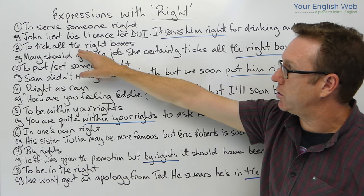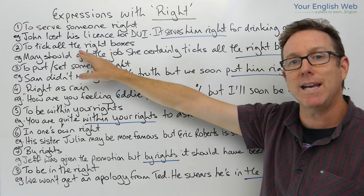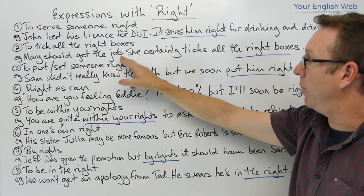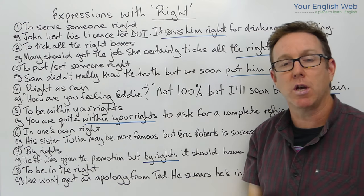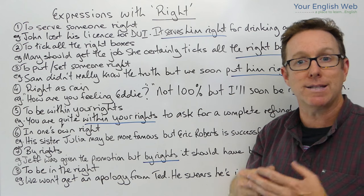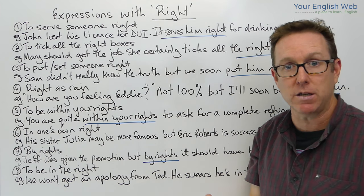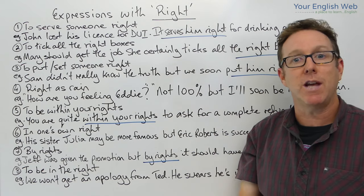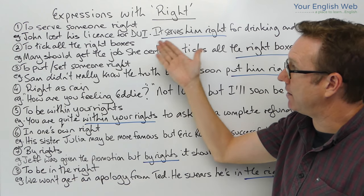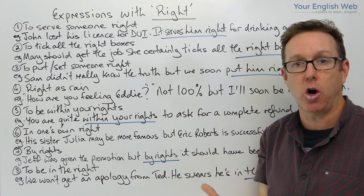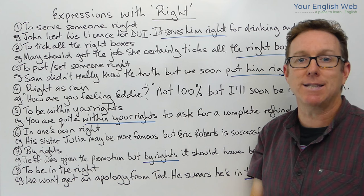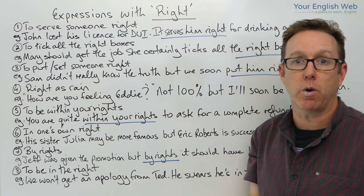The second expression is 'to tick all the right boxes'. Example: Mary should get the job — she certainly ticks all the right boxes. This means that because of her qualifications, skills, CV, experience, and languages, she is the perfect candidate for the job — the most adequate person. She fulfills all the requirements.